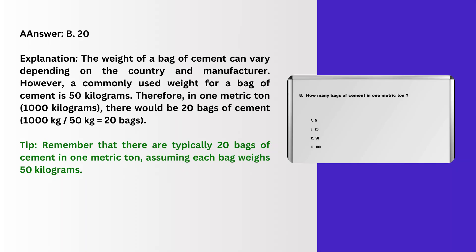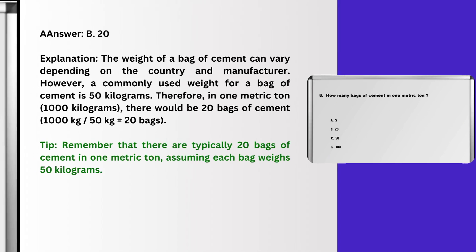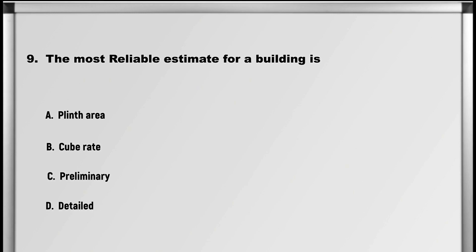Explanation: The weight of a bag of cement can vary depending on the country and manufacturer. However, a commonly used weight for a bag of cement is 50 kilograms. Therefore, in one metric tonne (1000 kilograms), there would be 20 bags of cement — 1000 kilograms ÷ 50 kilograms = 20 bags. Tip: remember that there are typically 20 bags of cement in one metric tonne, assuming each bag weighs 50 kilograms.